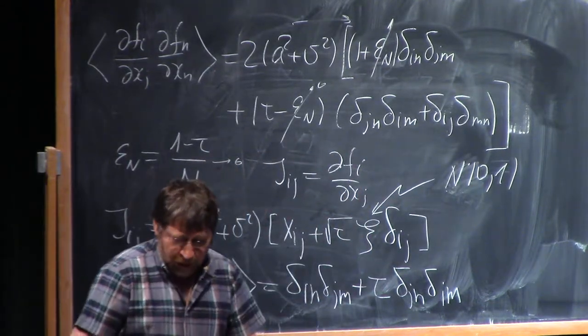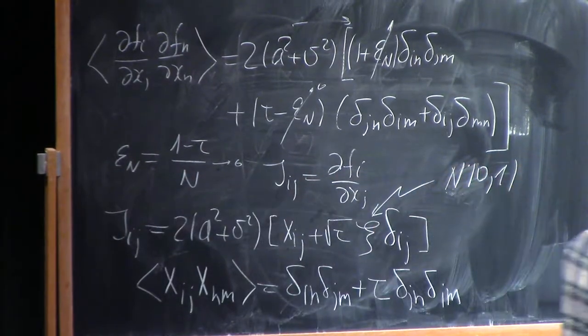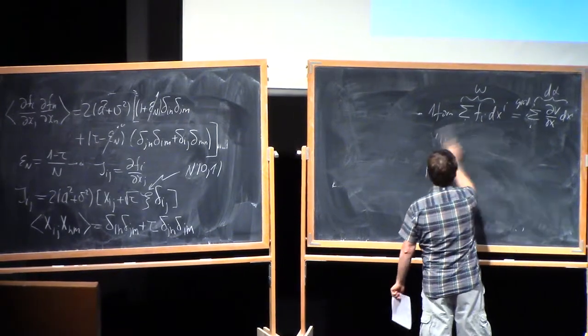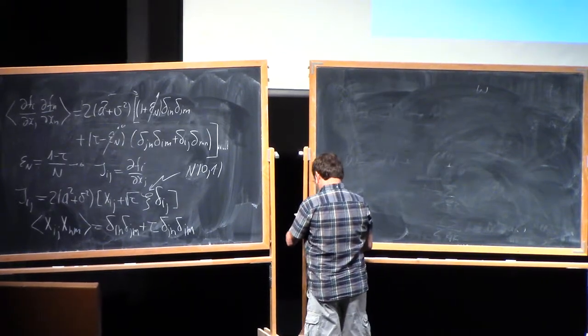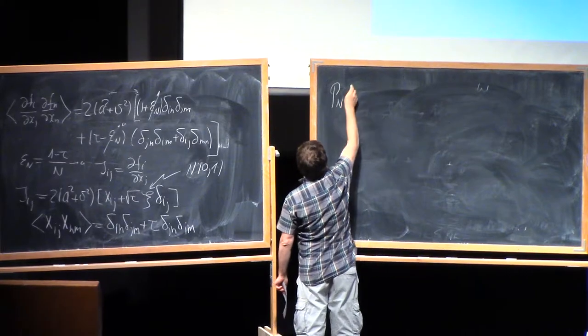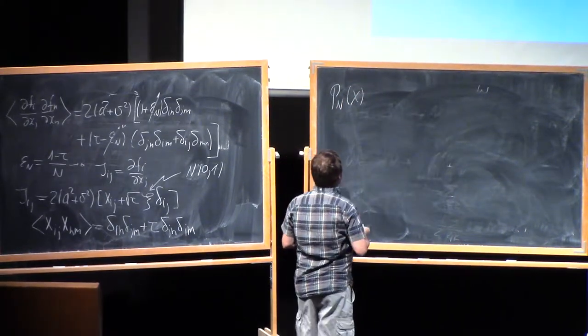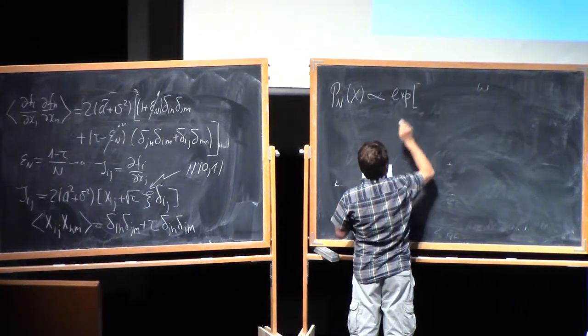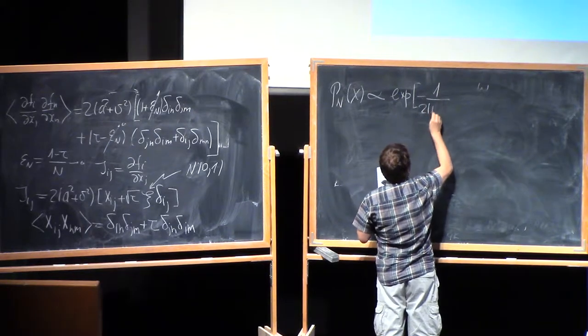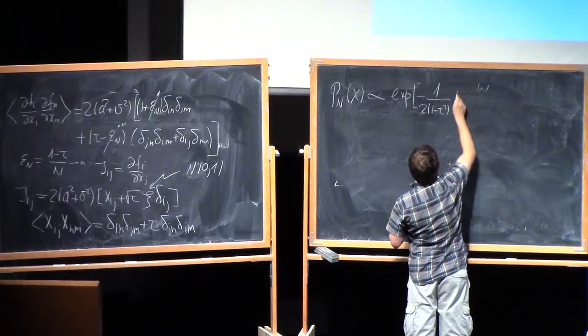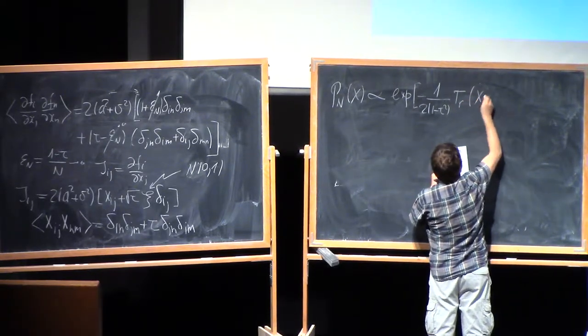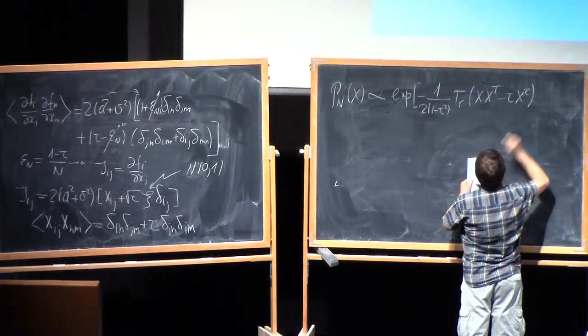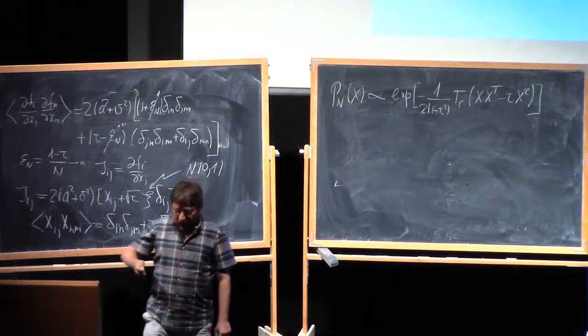So you may ask, we have Gaussian matrices, real matrices, whose covariance structure of the entries of this matrix have this form: delta_in delta_jm plus tau delta_jn delta_im. Plus simple term which is diagonal and random. Let us write down the joint probability density of entries of this matrix x and then you immediately recognize relation to something well known to us.